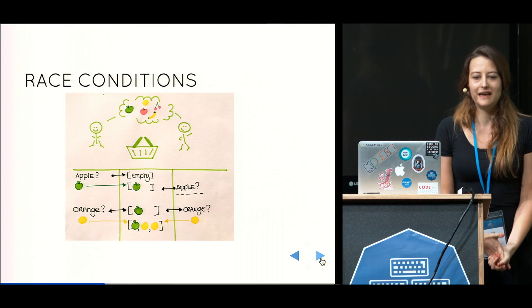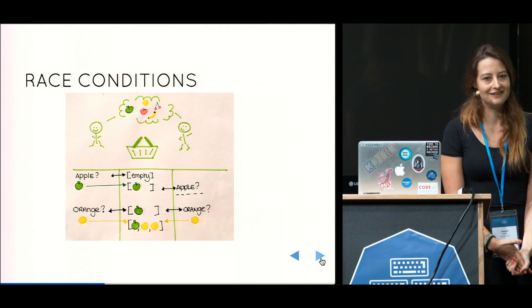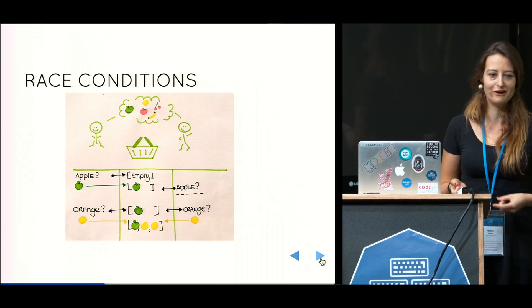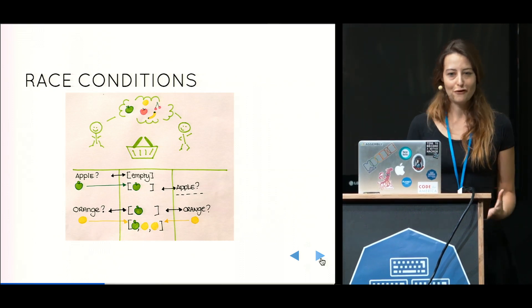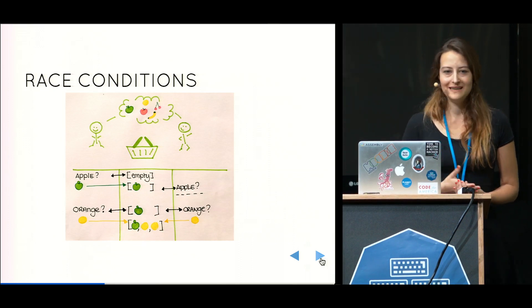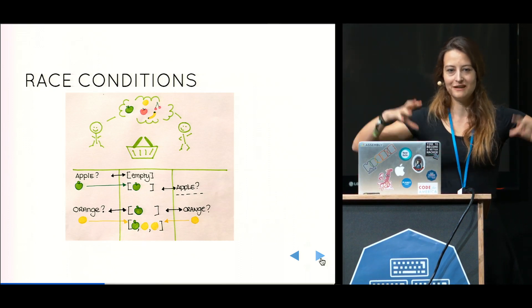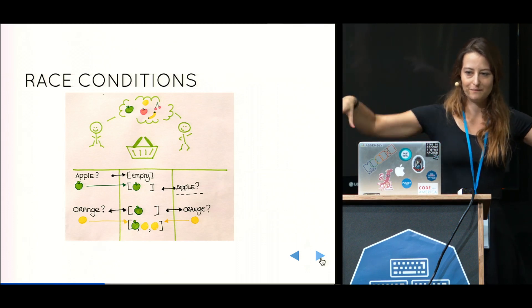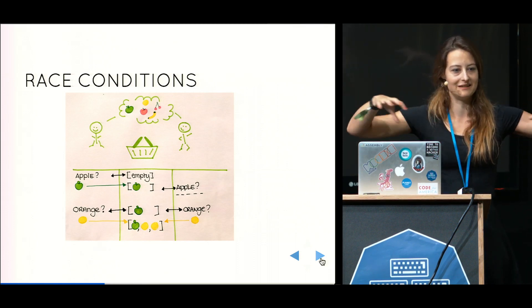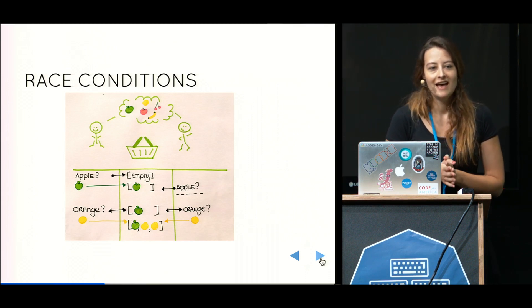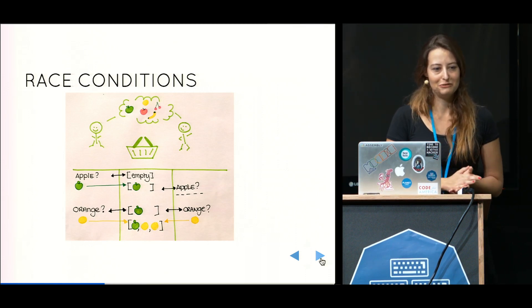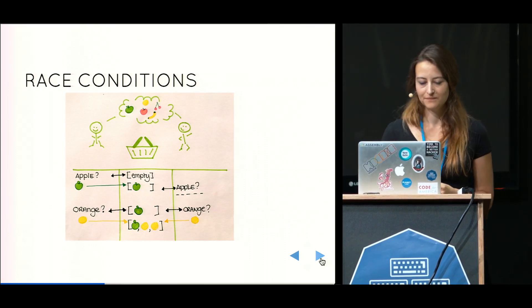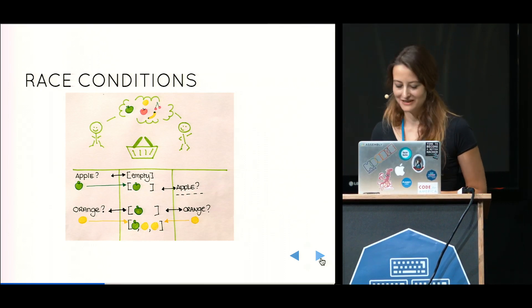And they are relevant today more so than ever before because we now have computers that don't have just one core. They don't have two cores. They have many multiple cores. Your phone has more than one core, which means that we're going to execute programs in parallel. So we're going to break them down in little pieces and execute all these pieces on different threads or processes. And that makes a problem like a race condition an actual problem we're dealing with today. This is also why it's getting so much attention today.